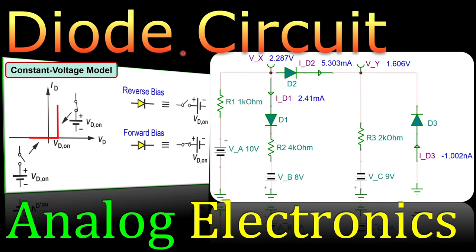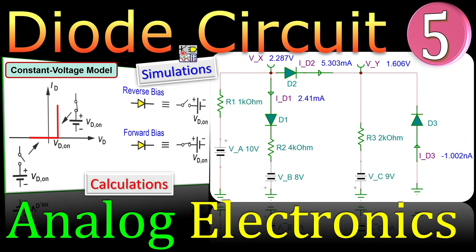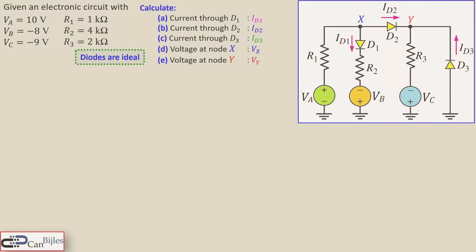Greetings and welcome to a new video about analog electronics. We continue with our diode circuit, and this is example number five. In the next example we'll look at more complicated circuits where we have three diodes and also three DC voltage sources, so that will be a little bit more complicated compared to the previous four examples. We will work out everything in the calculation step by step and also verify this in our SPICE simulations. Let's look at our circuit — as said, we have three sources VA, VB, and VC.